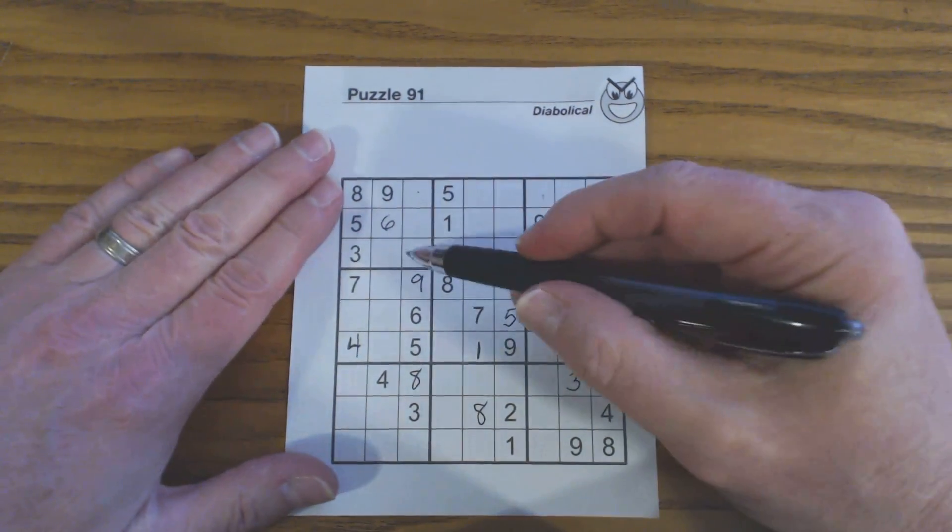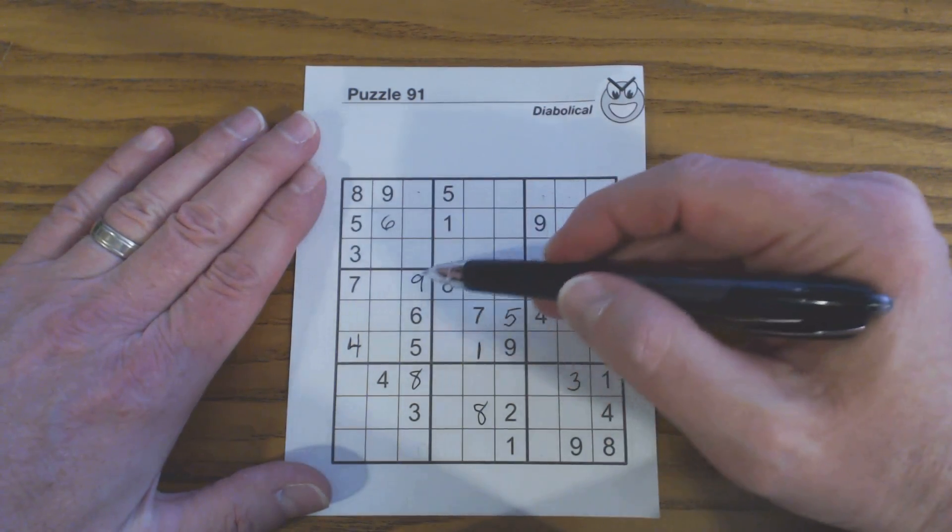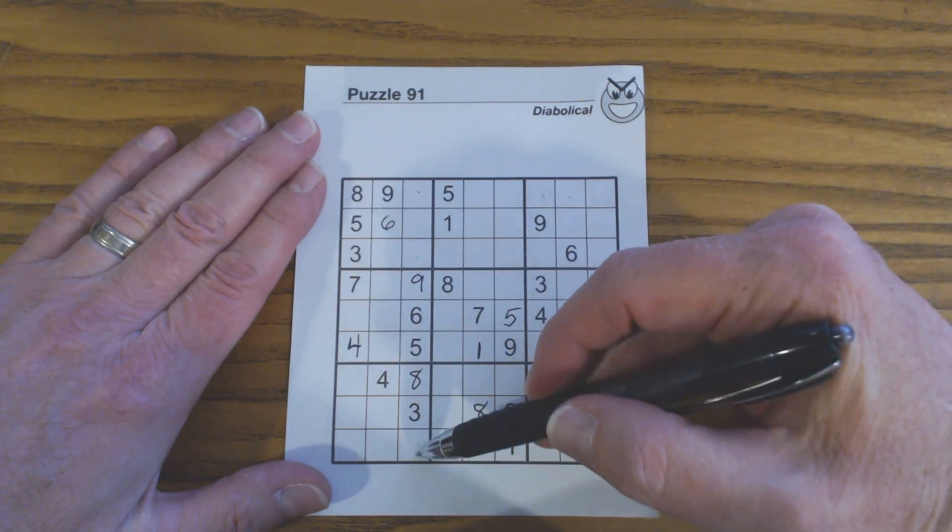We're going to look at this loner cell right here. This is a loner cell because it's the only cell in this square that's not populated that's outside this column.